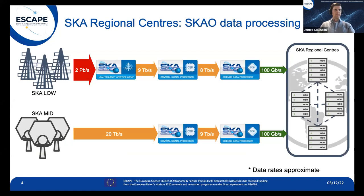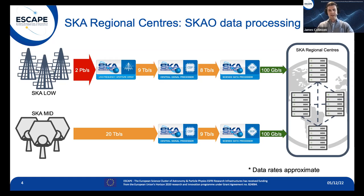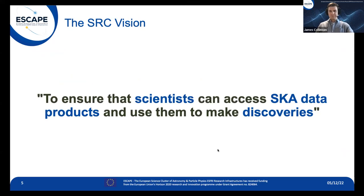The SKA-Low array is an electronic telescope with no moving parts — all beam pointing is controlled by electronics and software. Computers within the array constrain the effective field of view, producing around a factor of 250 reduction in raw data size from antenna voltages to signals sent to the central signal processor. The science data processors — two supercomputers — generate the actual observatory data products and feed these into the SRC network at up to 100 gigabits per second. The SRC network is key to how scientists will access and process the SKA data.